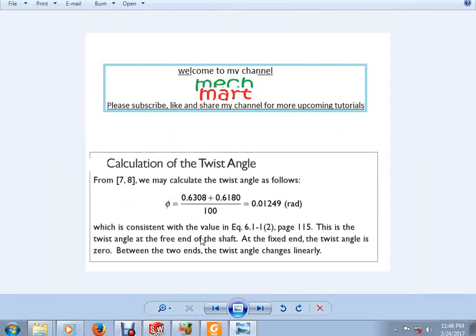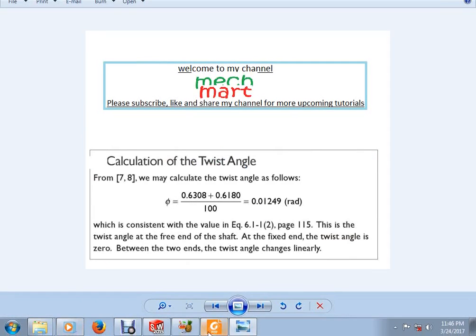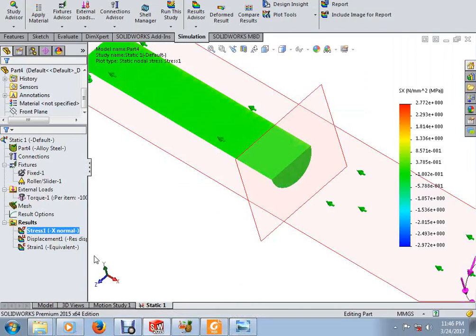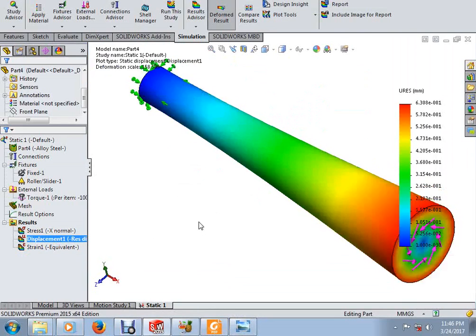Now, calculate the twist angles. How to calculate the twist angles? Okay, just simple, right click, double click the displacement.